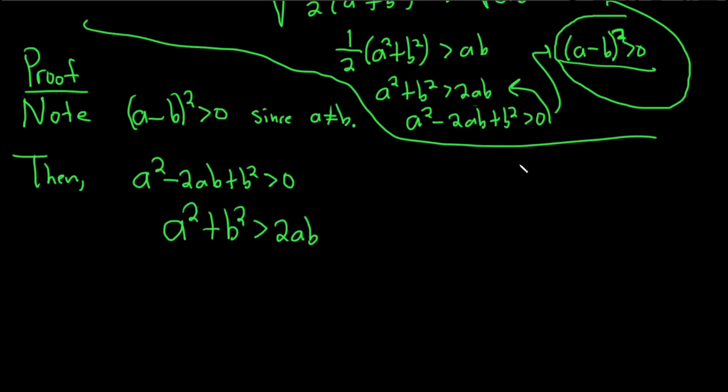And then now, we'll divide by 2, right? Going from here to here. This will be 1 half A squared plus B squared, greater than AB.